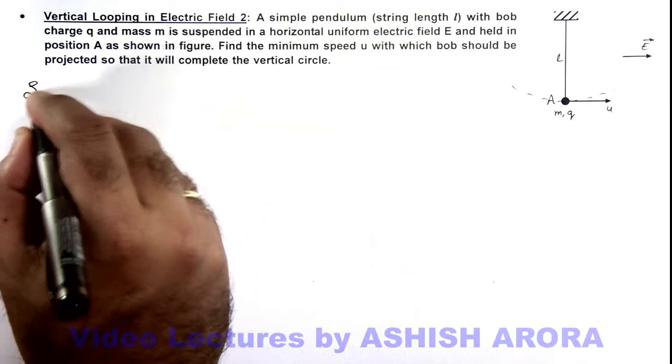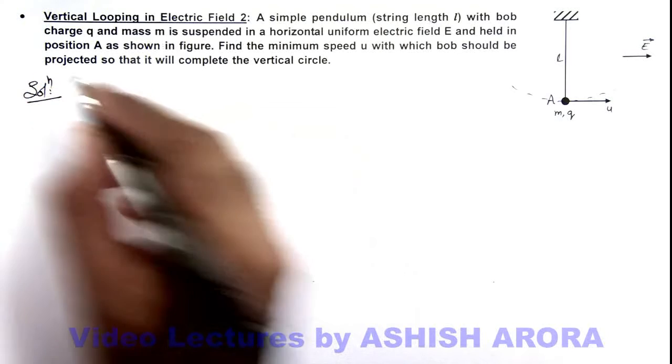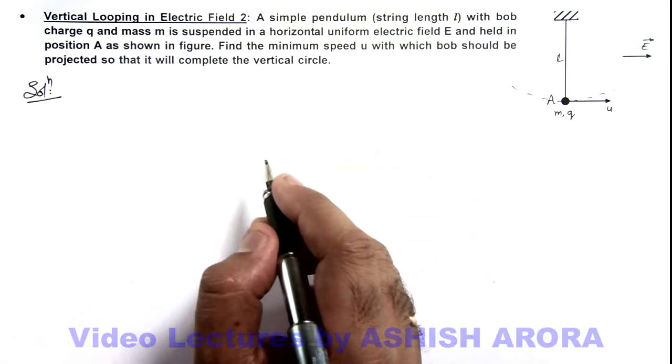We know well, in uniform gravitational field the minimum speed required to complete the circle is root 5 g l.